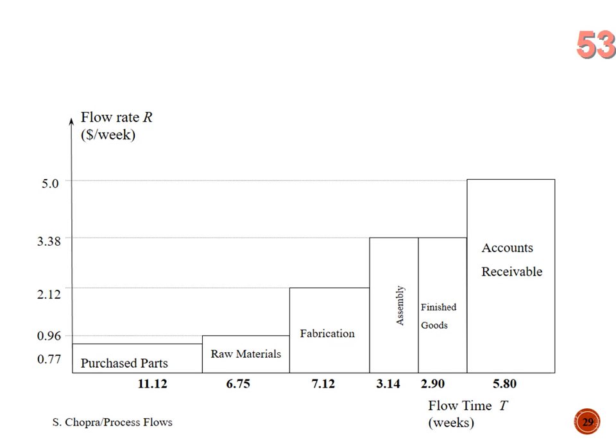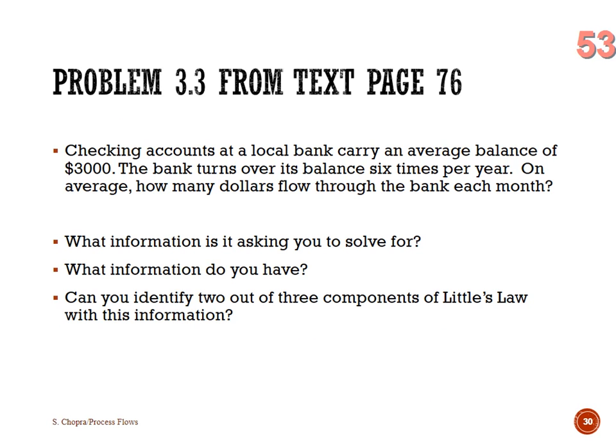That's a really interesting and strategic example — using process flow and Little's Law to get to strategic decision-making. Let's look at practice problems. Problem 3-3 from the text on page 76: checking accounts at a local bank carry an average balance of $3,000. The bank turns over its balance six times per year. On average, how many dollars flow through the bank each month? We're solving for throughput.